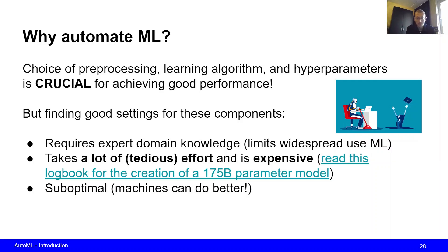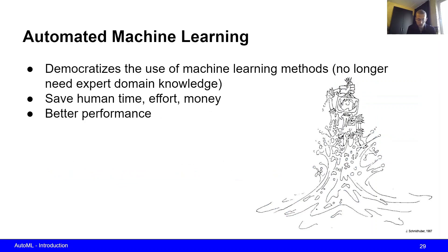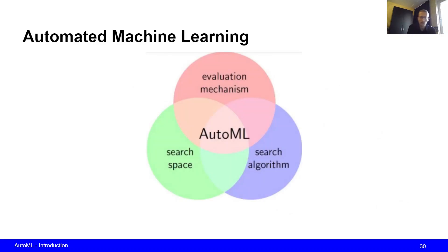Lastly, having a human finding good settings for these components may be suboptimal, so machines may be able to do better. All of these reasons are why we would want to automate machine learning. By automating machine learning we democratize the use of machine learning methods, meaning that we increase the wide applicability and lower the threshold for actually using these techniques. You no longer need to have expert domain knowledge to actually use machine learning methodologies. Secondly, it can save human time, effort, and money, and lastly it can lead to better performance.